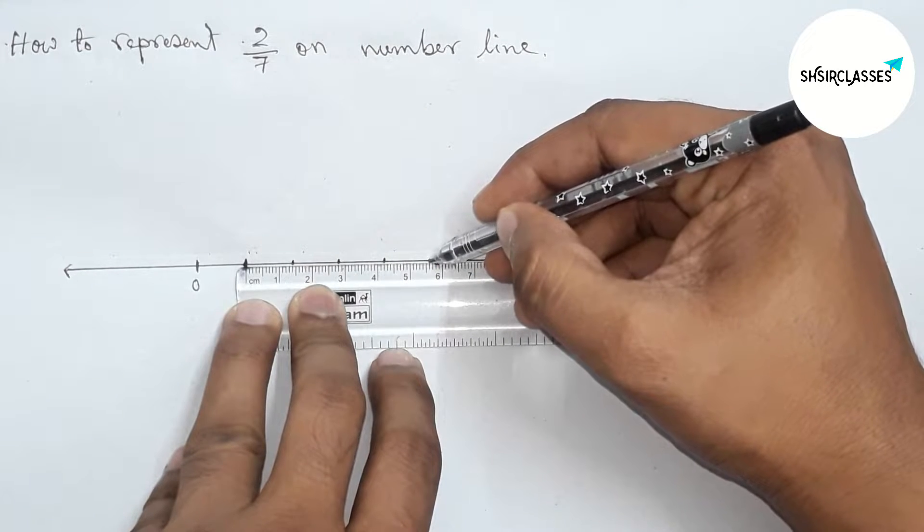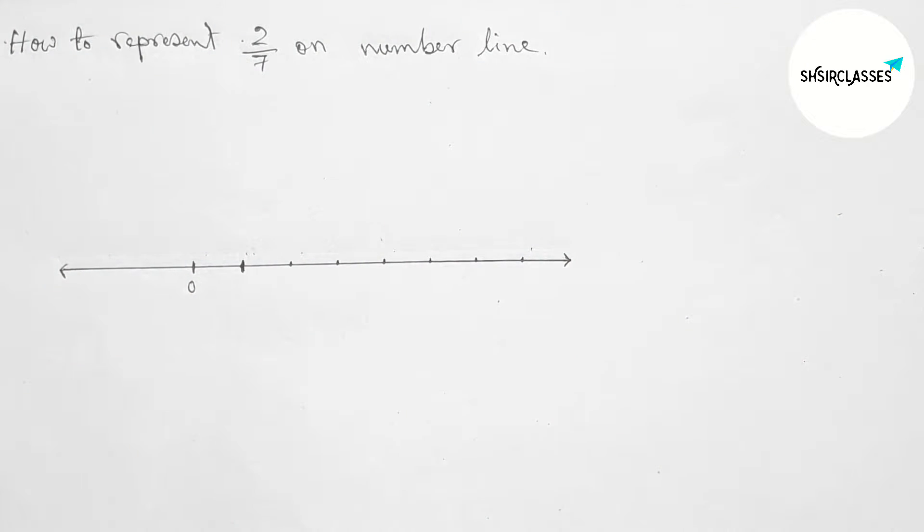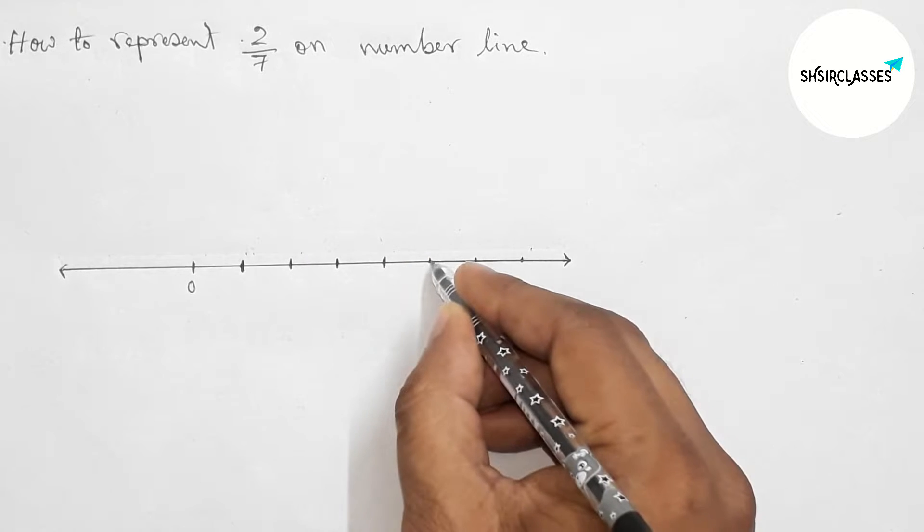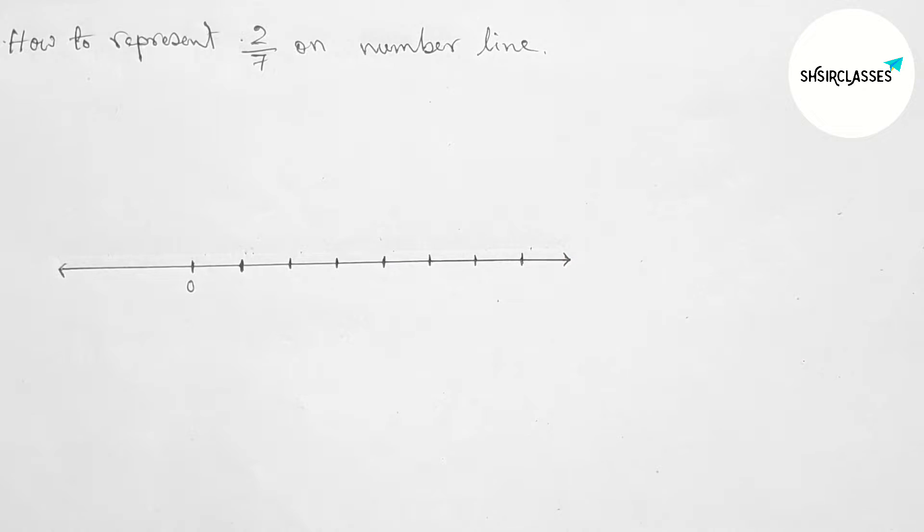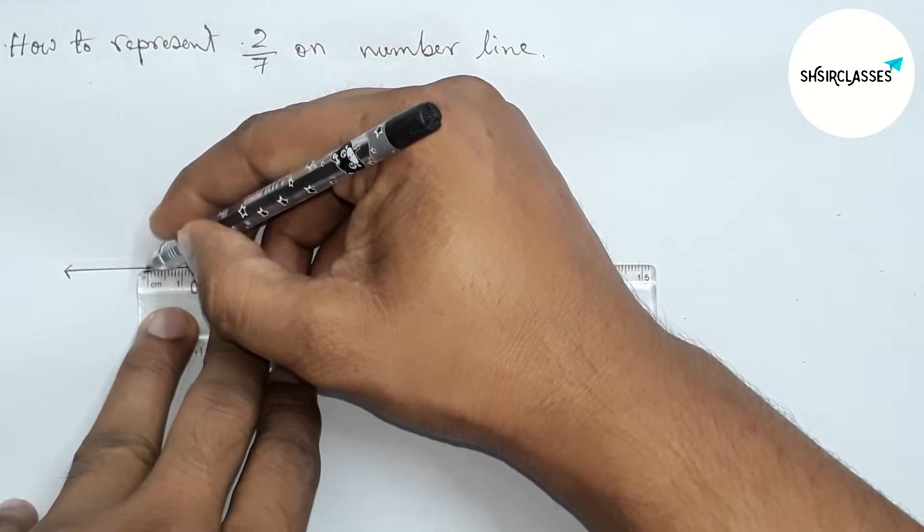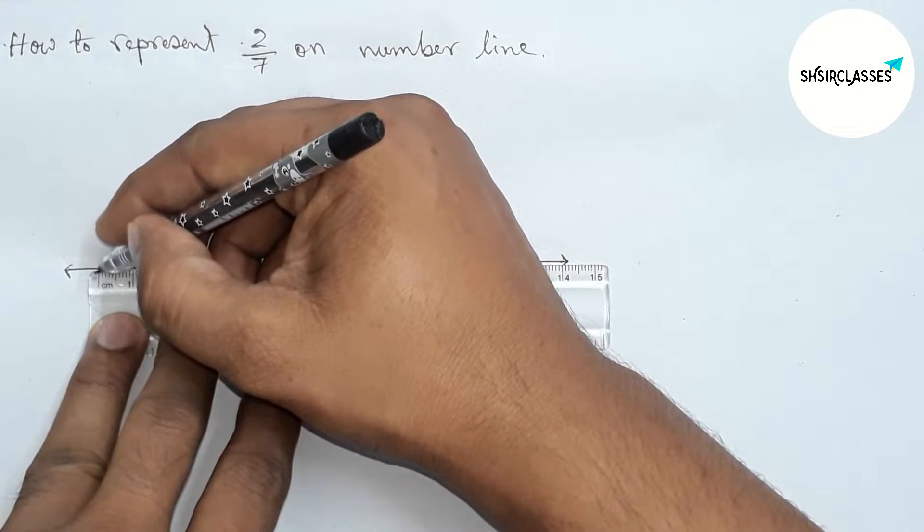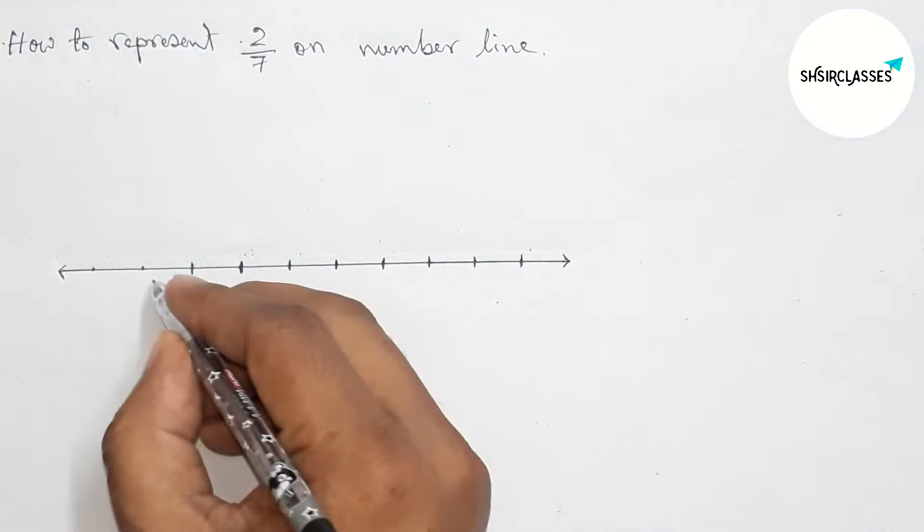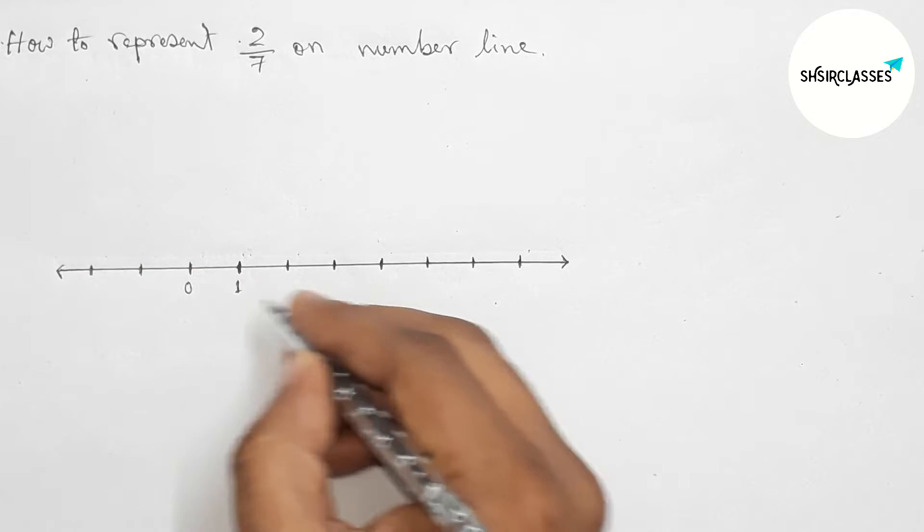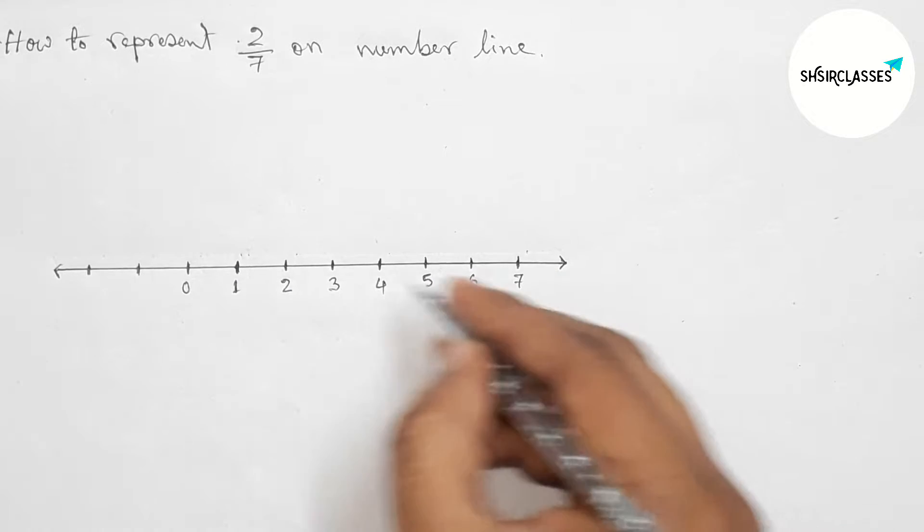Taking 1.4 centimeter as one unit length. First, marking the numbers with deep color to understand perfectly. Similarly 1.4 centimeter, marking here and here. So here 1, 2, 3, 4, 5, 6, 7, and this side minus 1, minus 2. This is the number line.